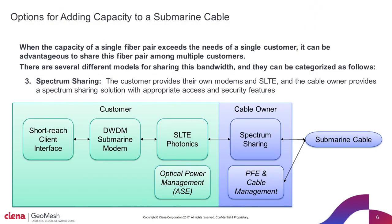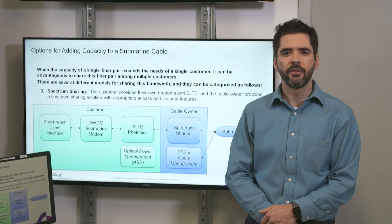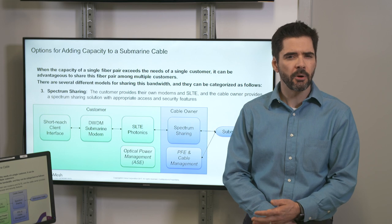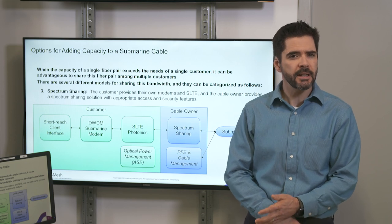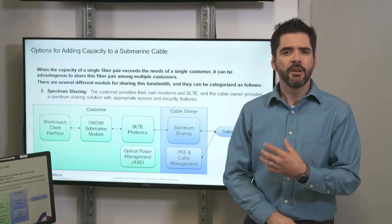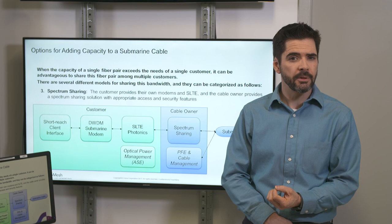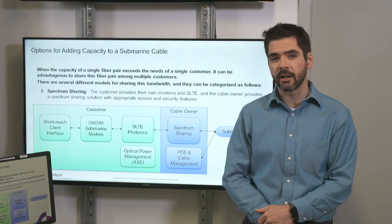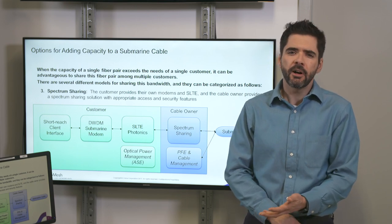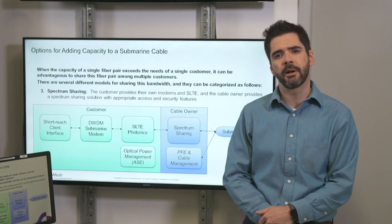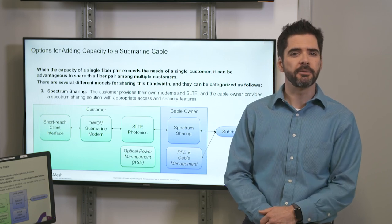The third option is spectrum sharing. In this case, each customer will use their own modems and their own SLTEs, and the cable owner will provide a spectrum sharing solution. This allows the customer to control both modem and SLTE technologies to meet their own capacity requirements without having to purchase an entire fiber pair. This can be thought of as providing a virtual fiber pair for each spectrum sharing customer.